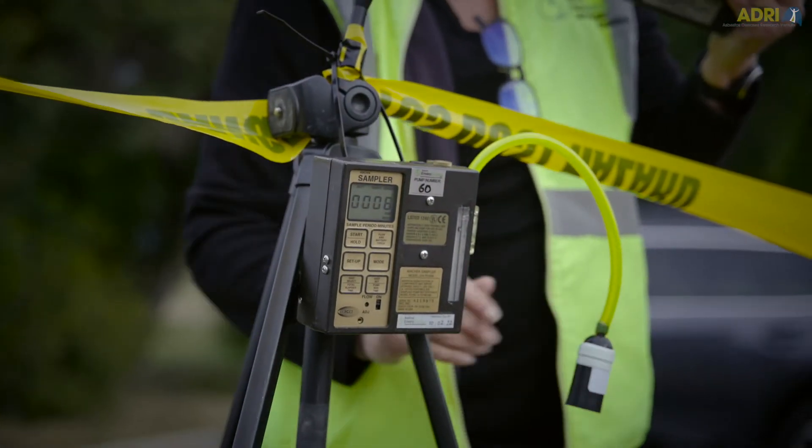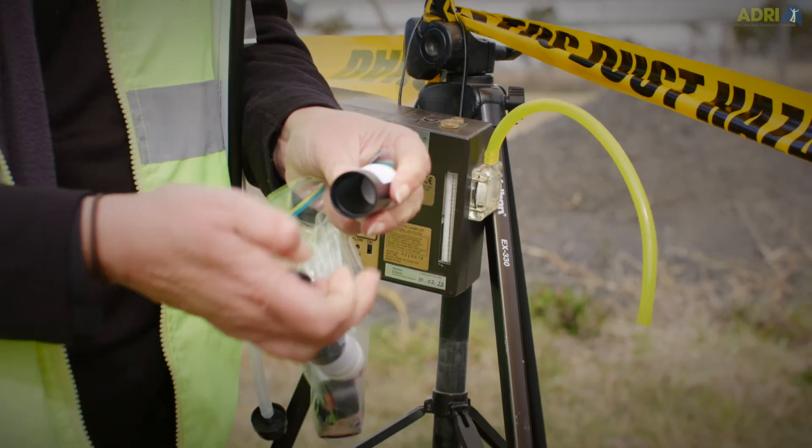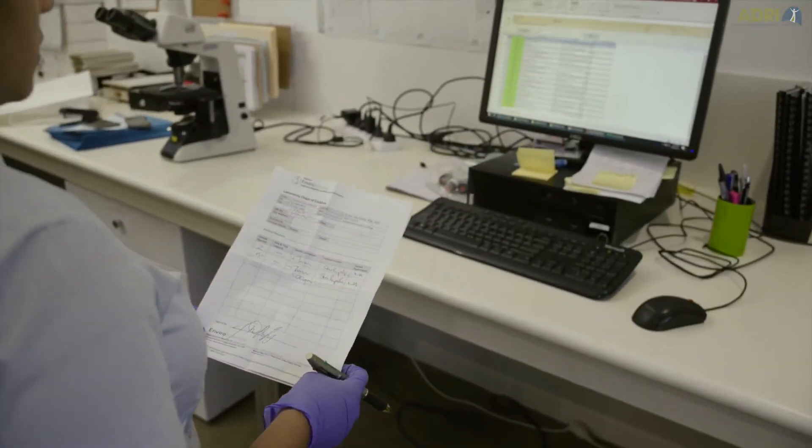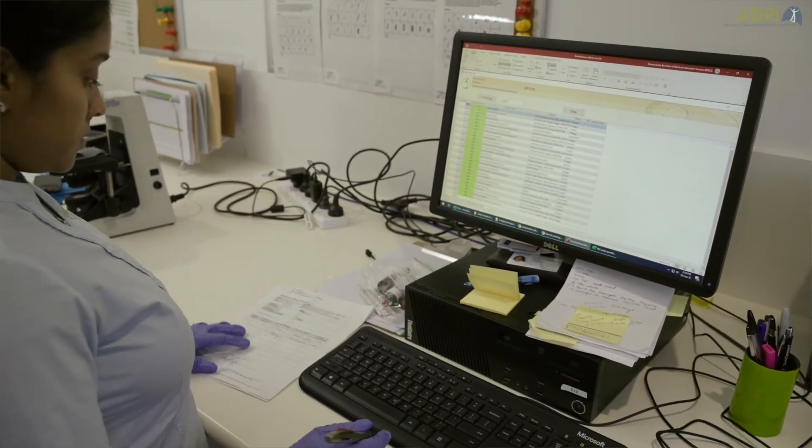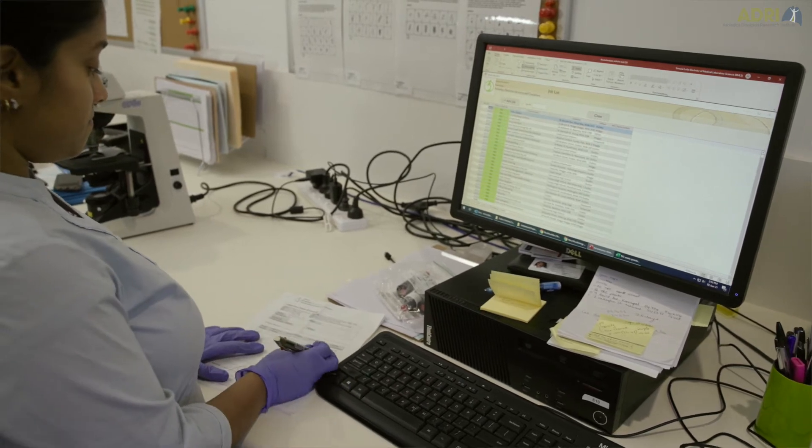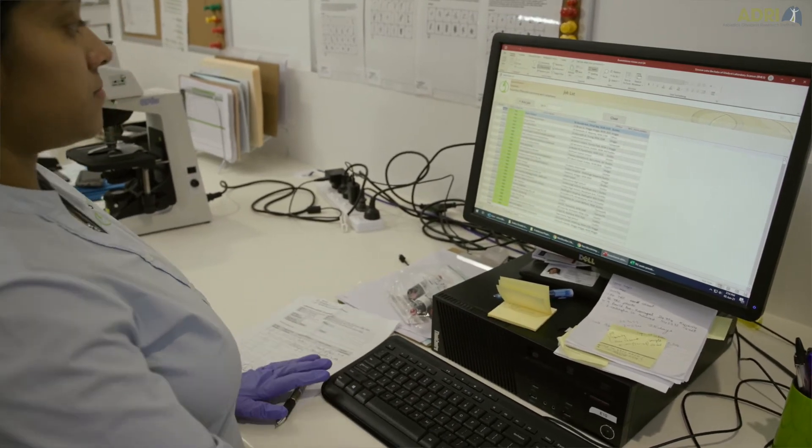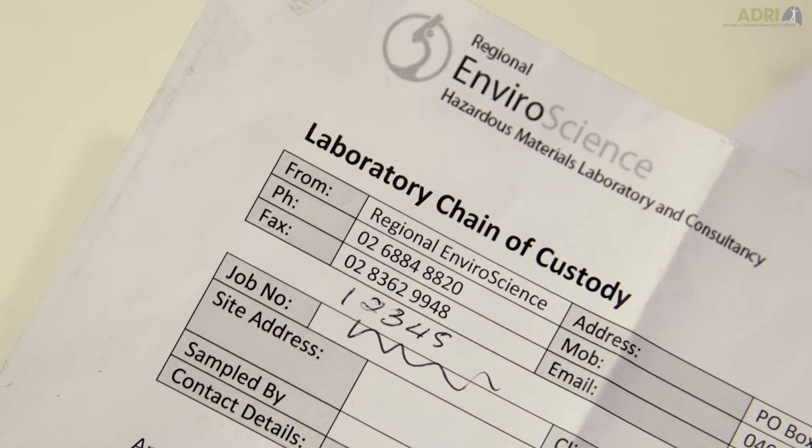With asbestos air monitoring, when the filters come in, it's very much the same process. The cows come in, they're documented into our system given their unique identification number, the client details are logged, the location of the samples, the time on and off, the flow rate and the total time used so we can work out the concentration of fibres per mil.